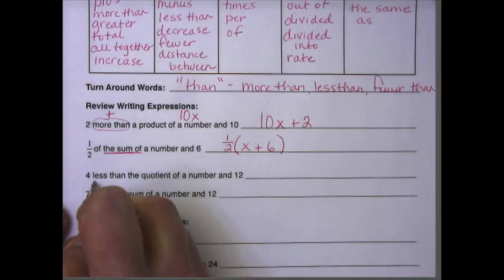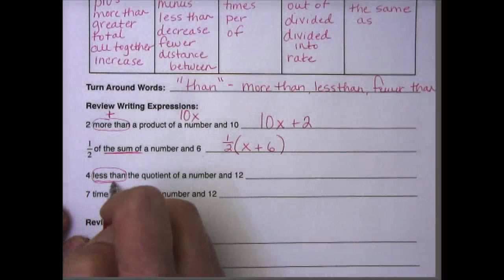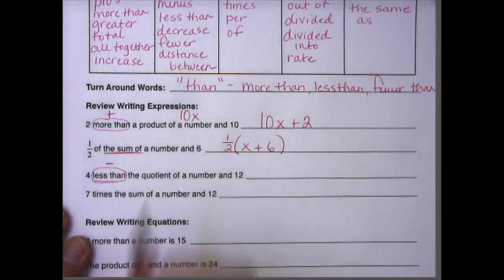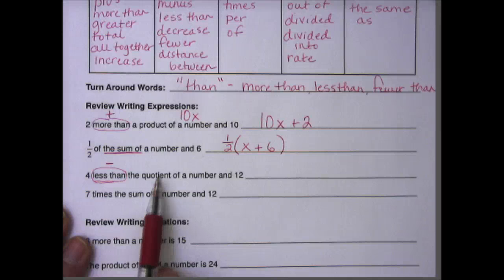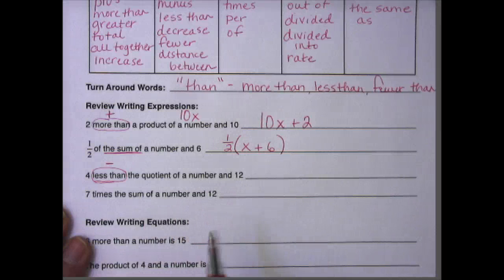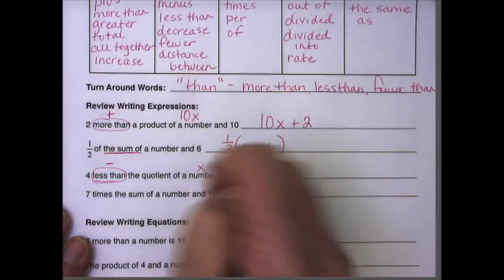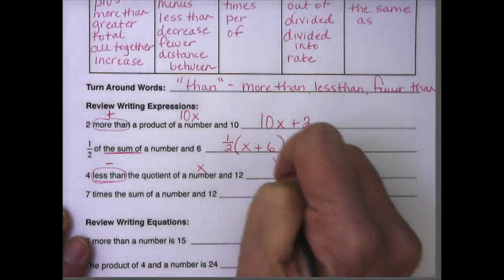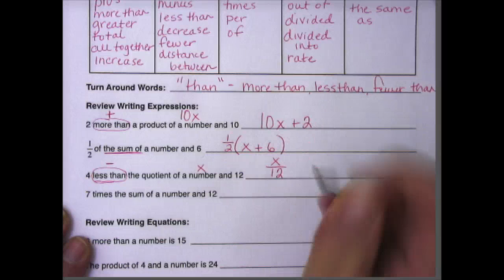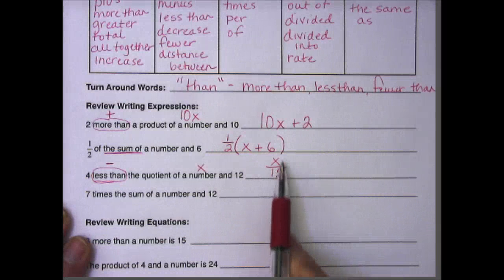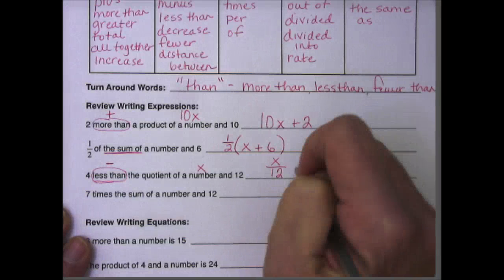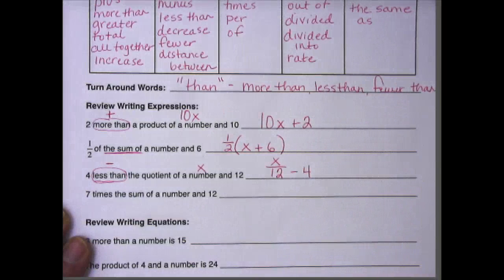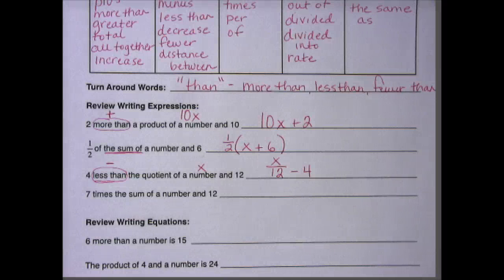The next one says four less than, and I remember less than is one of our turnaround words, but it also means to subtract. The quotient, remember, is the solution to a division problem, so we know we're going to divide a number by 12. So we can call this x. So turnaround words, so x divided by 12. Remember that we are using the algebraic form of division instead of the division symbol. x divided by 12 minus 4.